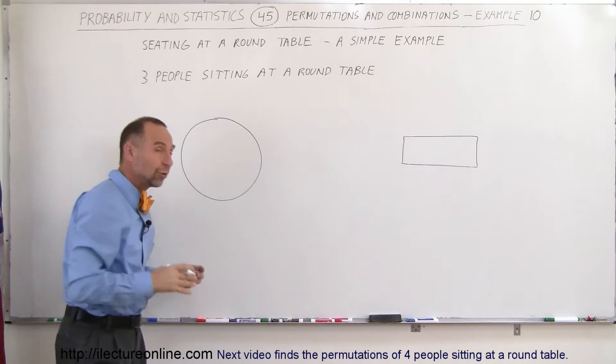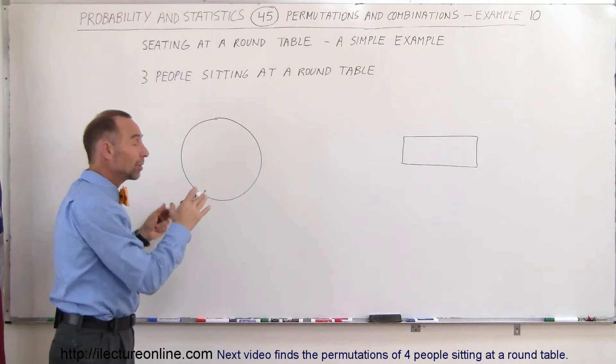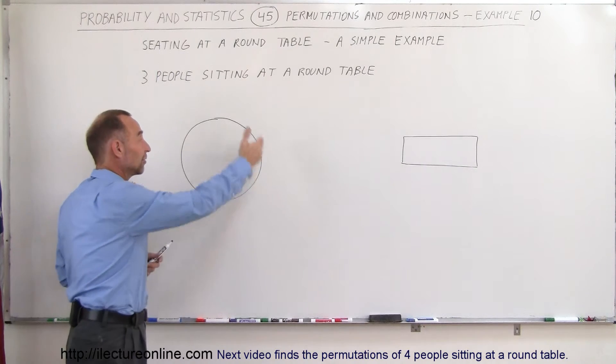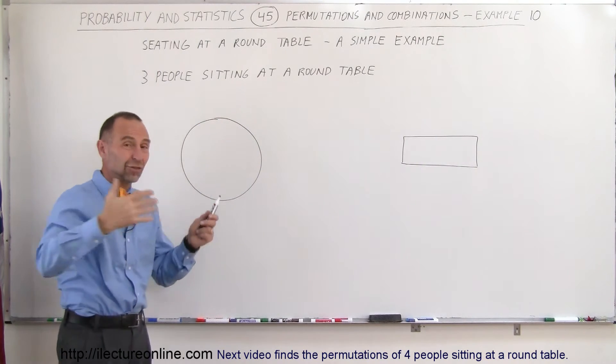The problem with a round table is the first person that sits down on a round table can sit anywhere, and it really doesn't make any difference, because from the perspective of a round table, since it's a circular shape,